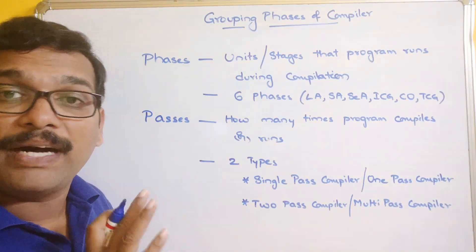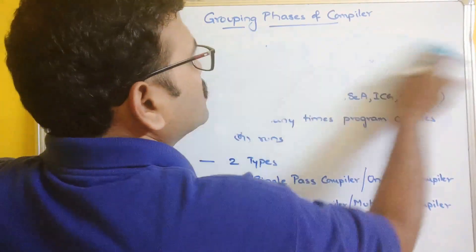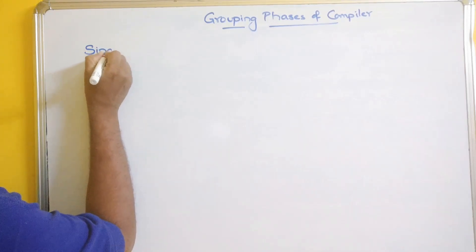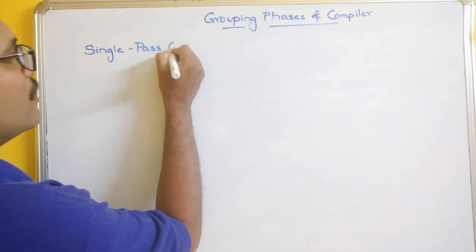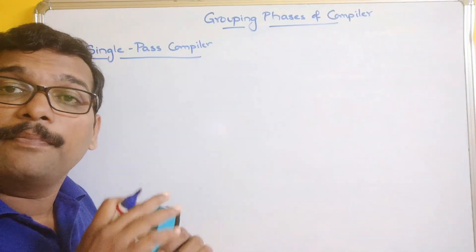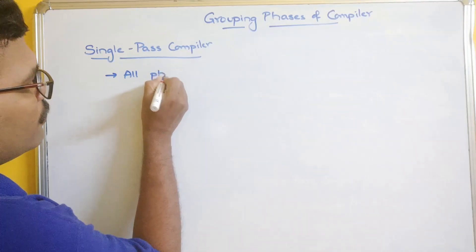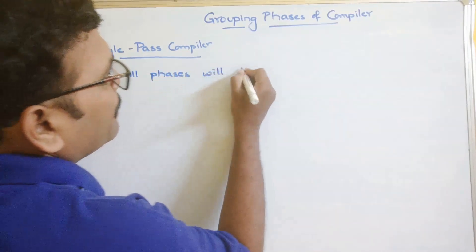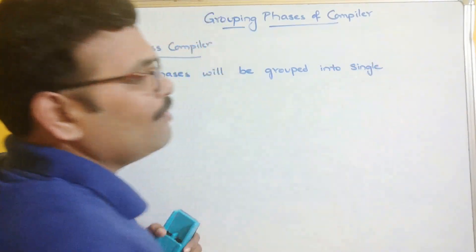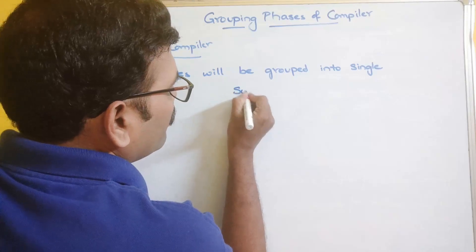Now we'll see what is a single pass compiler and what is a two pass or multi-pass compiler. Coming to the first category — the single pass compiler — all six phases will be grouped into a single category. Whenever we give the source code, it goes through all phases in one pass.